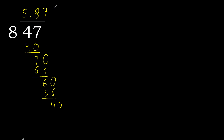8 multiplied by 5 is 40. Subtract: remainder is 0, therefore finished. 47 divided by 8 is 5.875.